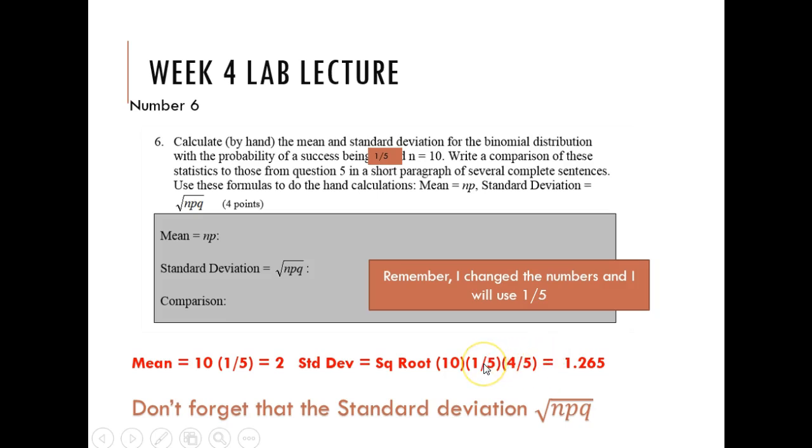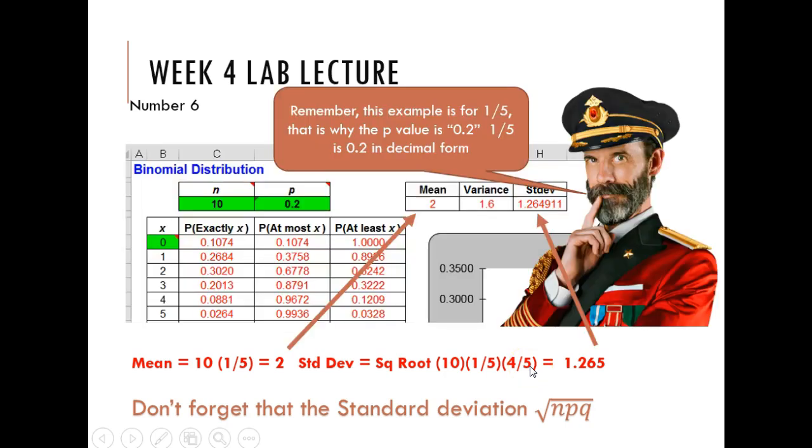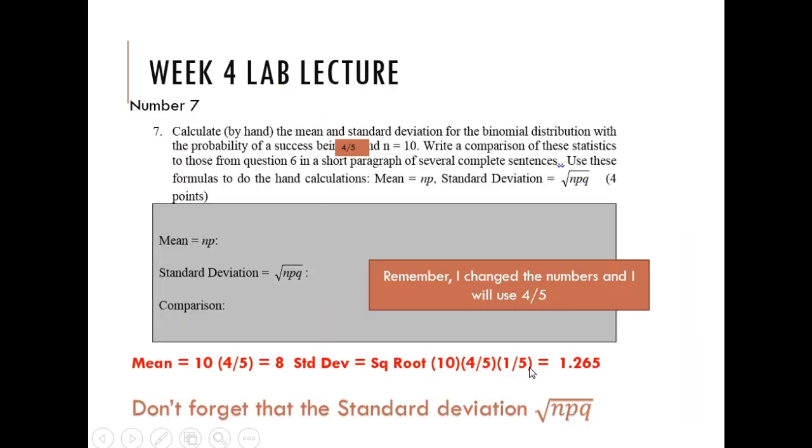The reason is on number six, n was ten, p was one-fifth, q was four-fifths. On my number seven example, my p and q are just switched. I think that's going to be the same for your number six and seven also, because you've got one-fourth and three-fourths, so you're probably going to get the same standard deviation for number six and number seven.